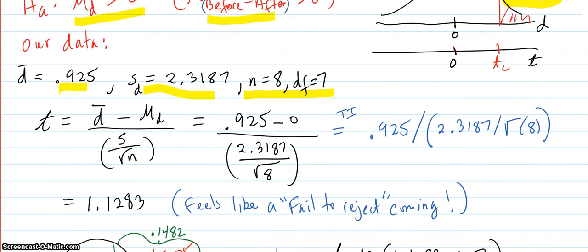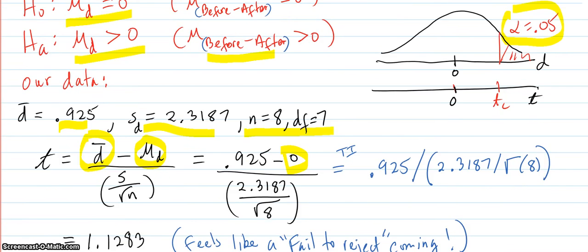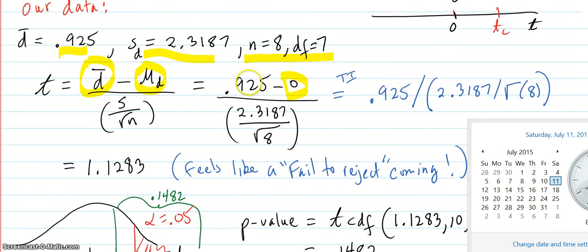But we do have our t-design. Again, it's the d-bar average of the differences minus the hypothesized mean difference, which is zero. The hypothesis says that the mean difference is going to be zero. So you put that stuff in and it's eight. Here's your standard deviation of the differences. Again, I should probably put the little d there.